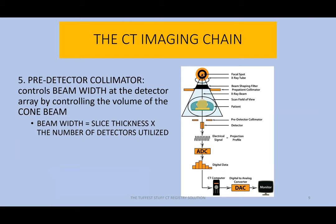Component number five is the pre-detector collimator. The pre-detector collimator is responsible for controlling the beam width at the detector array by controlling the volume of the cone beam.